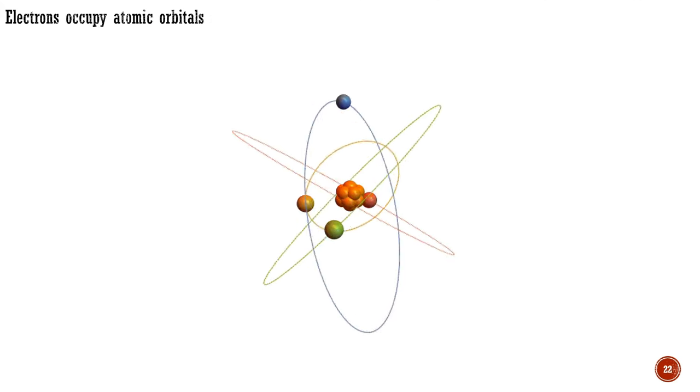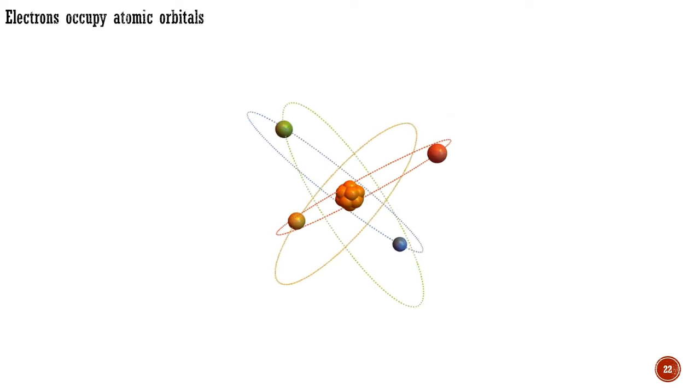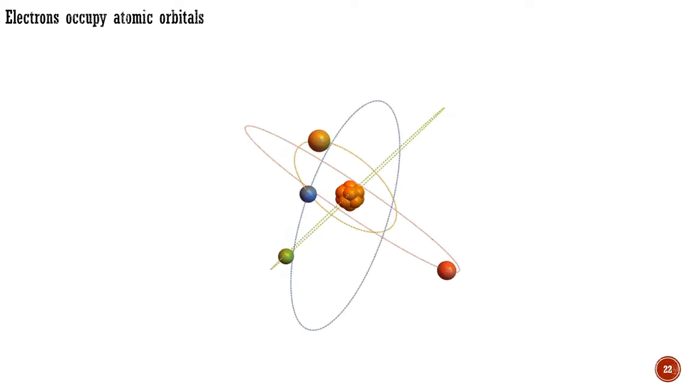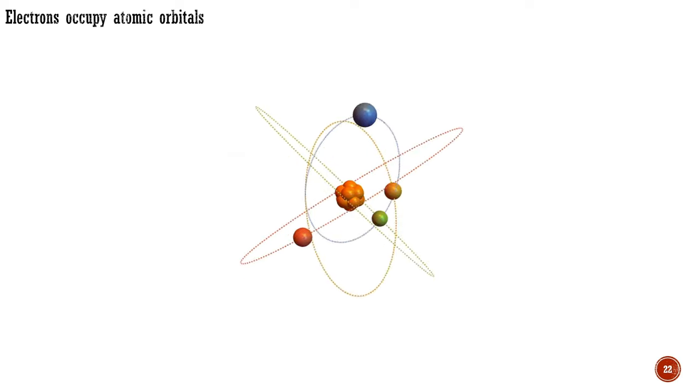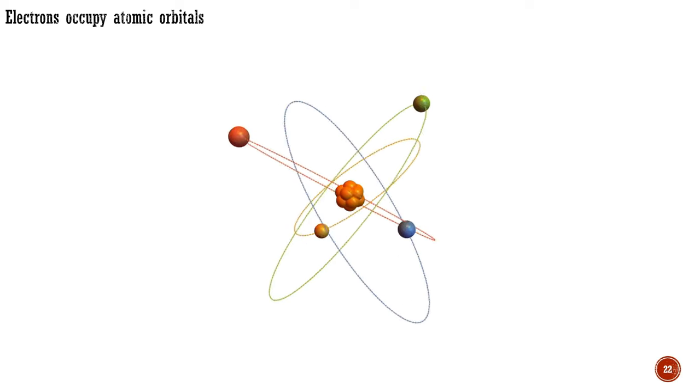If you imagine an electron orbiting a nucleus like a string looped back on itself, you can visualize why only certain wavelengths are possible. These wavelengths have associated frequencies, and the frequencies have associated energies, providing a plausible explanation for the quantization of electron energy. The popular image of an atom as a miniature solar system, with electrons behaving like planets orbiting the nucleus, works in some situations, but we need to move beyond it.